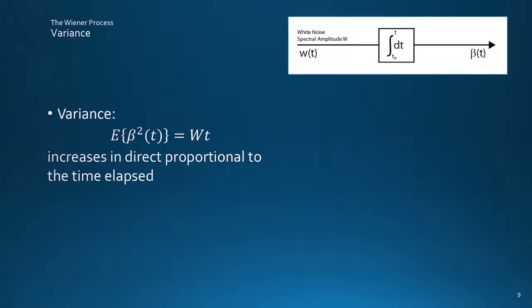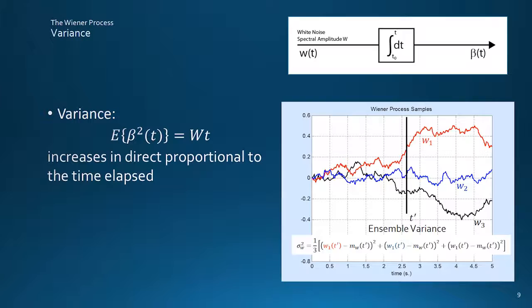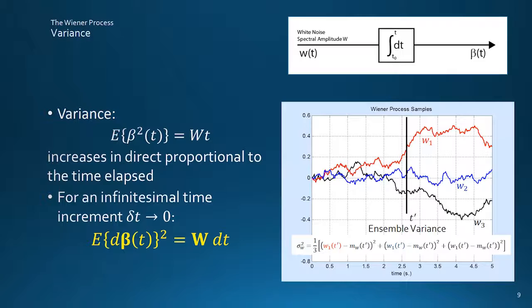Big W here is known as the diffusion of the process, but remembering again that this result applies to the ensemble rather than to any one particular sample. Taking the limit of an infinitesimal time interval gives this result, which in matrix form is the one needed for state-space analysis.